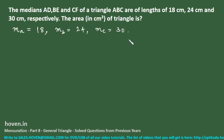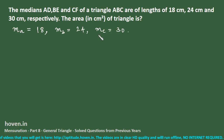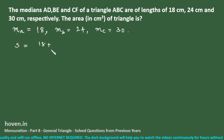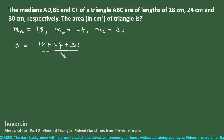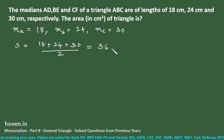We don't need to draw a diagram. The medians are: median A = 18 cm, median B = 24 cm, median C = 30 cm. The semi-median S = (18 + 24 + 30)/2 = 72/2 = 36. Then S − MA = 36 − 18 = 18.